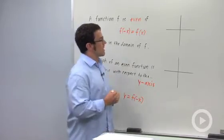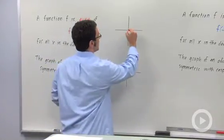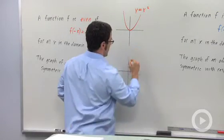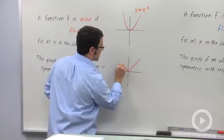Now let's look at two examples from our parent functions. There's y equals x squared and there's y equals the absolute value of x.